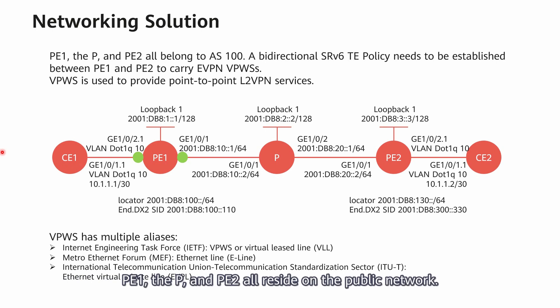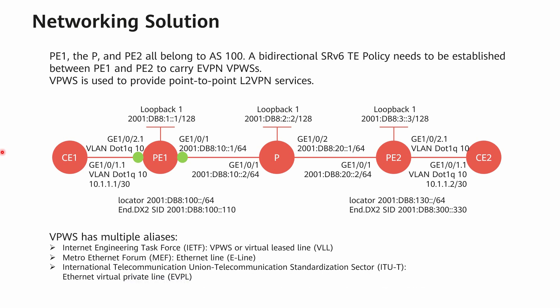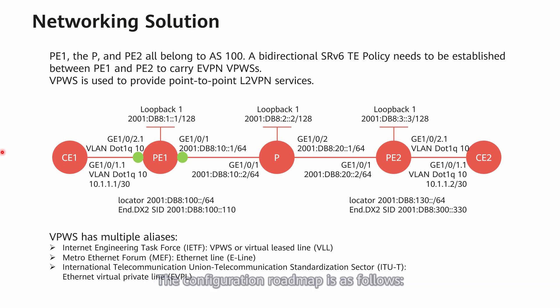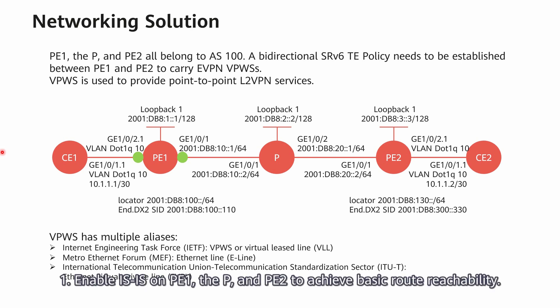P1, the P, and P2 all reside on a public network. C1 and C2 are connected to customer networks. A bi-directional SRV6TE policy needs to be established between P1 and P2 to carry EVPN VPWS. The configuration roadmap is as follows. First, enable IS-IS on P1, the P, and P2 to achieve basic route reachability.